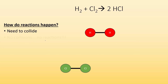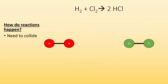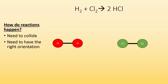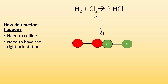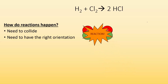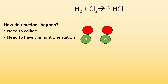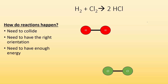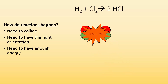So how do effective collisions happen? First, they need to collide — no collision, no reaction. They also need the correct orientation; colliding in the wrong way gives no reaction, whereas colliding in the right way produces a reaction. What else? They need to have enough energy. If molecules are moving slowly and bump into each other, you get no reaction. Whereas if they have more energy, you get a reaction. They need to collide, have the right orientation, and have enough energy.